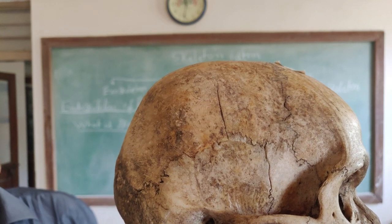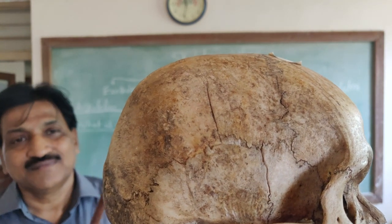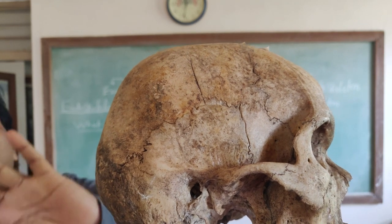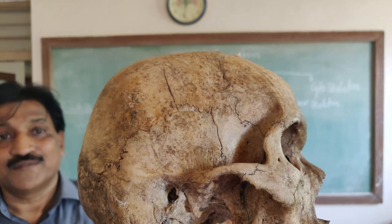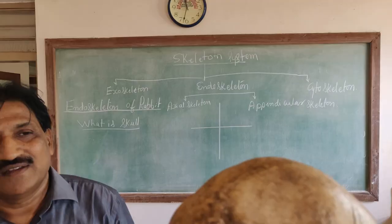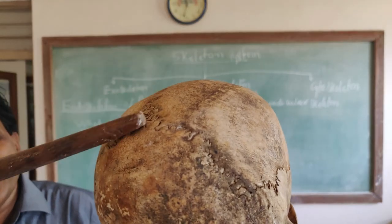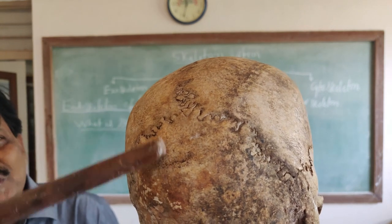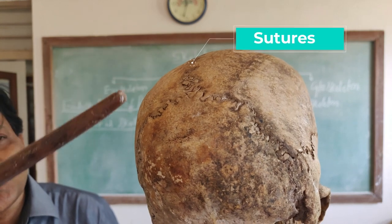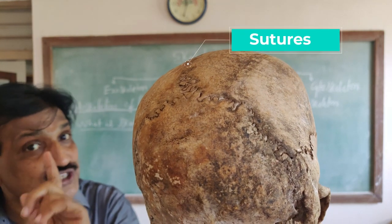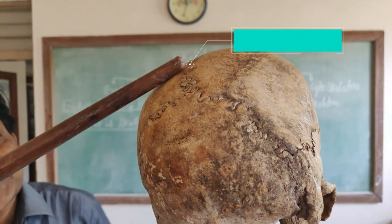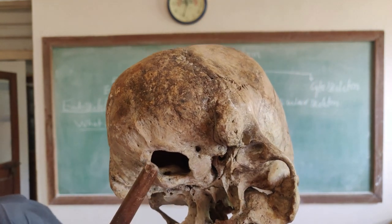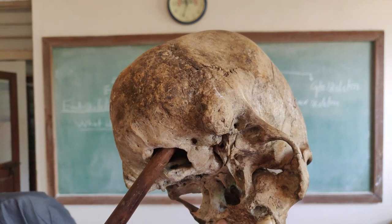The zygomatic arch is an important question both in theory and in practicals — they will ask you to identify the marked part. Next, we can find a stitching-like structure called sutures. The suture shows the fusion of bones present in mammals. At the posterior end of the skull, we can find a large opening called the foramen magnum.